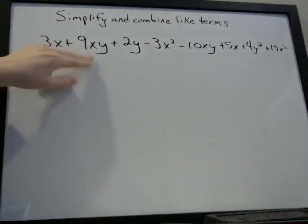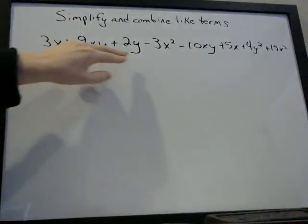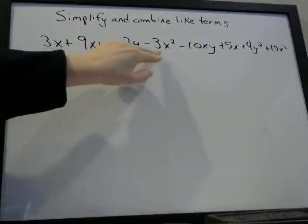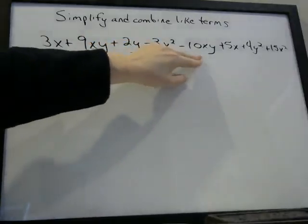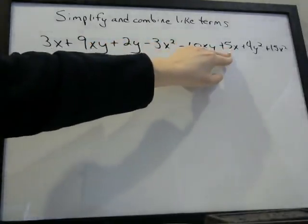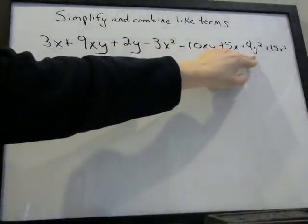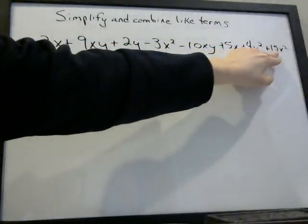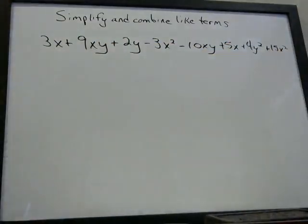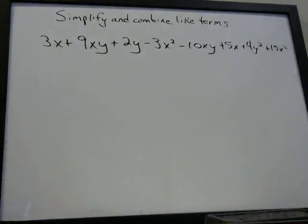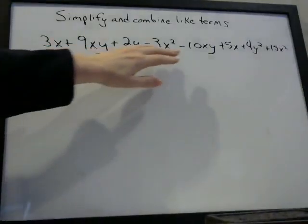Here's the last example: 3x plus 9xy plus 2y minus 3x squared minus 10xy plus 5x plus 4y squared plus 15x squared. The first thing we're going to do is put like terms close to each other, because we have a lot of different types of terms here.